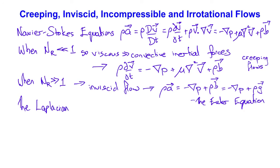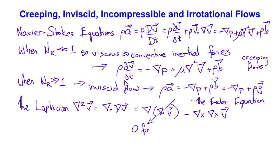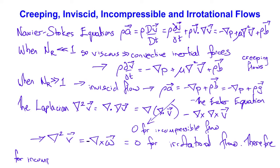The Laplacian in the viscous forces equals div grad v, but it is also equal to grad div v minus curl curl v. In an incompressible fluid, div v is zero, and curl v is the vorticity vector, so curl v is zero for an irrotational flow. Therefore, for an incompressible irrotational flow, the Navier-Stokes equations reduce to the Euler equation even if the fluid is not inviscid.